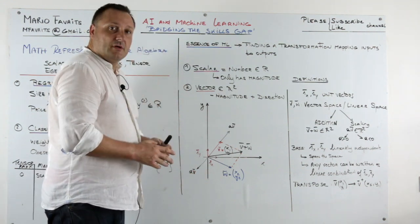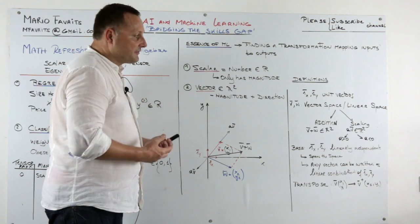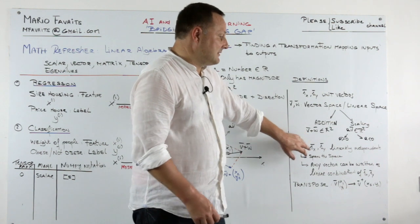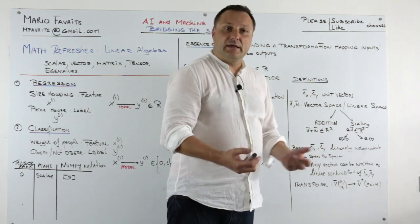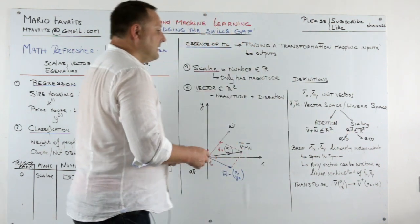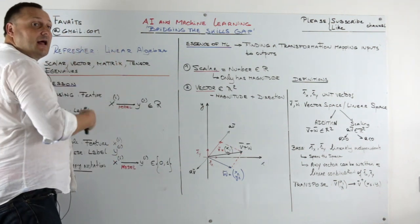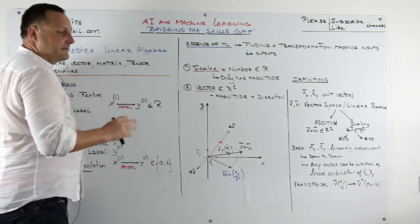But this is important. A vector space and a linear space is a space where you have the addition and where you have the scaling characteristics. By the way, it's exactly what the term linear in linear algebra means. It's about these two characteristics.